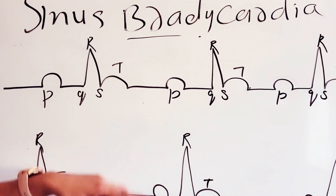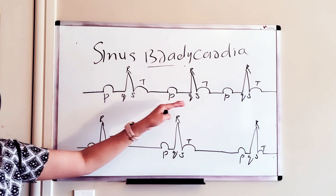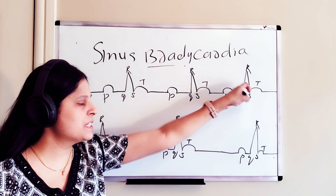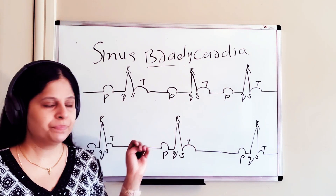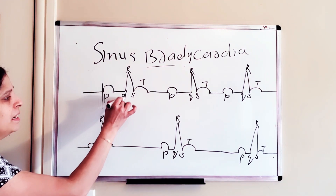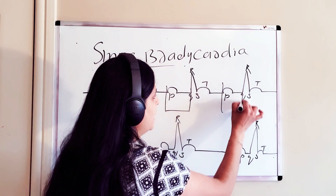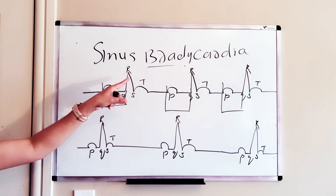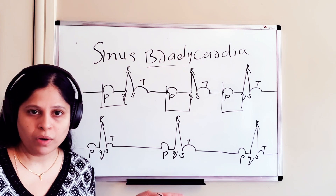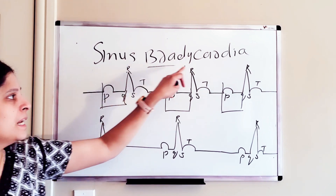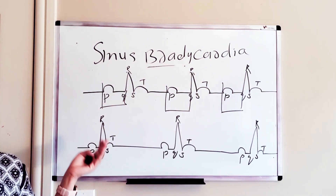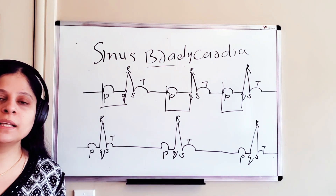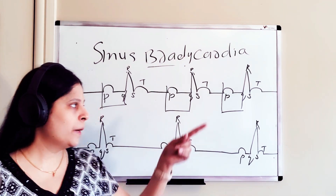You can see two ECG rhythms on the board. The first is a normal ECG rhythm — you can see P wave, QRS complex, T wave repeating with nothing missing. The PR interval is within one big box, approximately 0.12 to 0.20 seconds. The RR interval looks within three to five big boxes, the rhythm is regular, and the heart rate is normal between 60 to 100 beats per minute. That's a normal sinus rhythm.